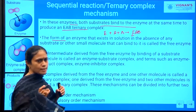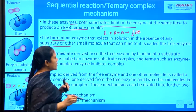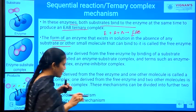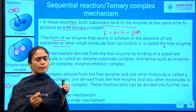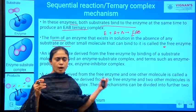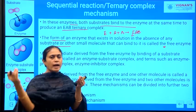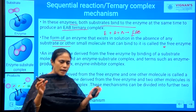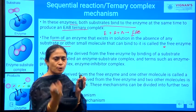The form of an enzyme that exists in solution in the absence of any substrate or other small molecules that can be bound to the enzyme is called the free enzyme. Total enzyme is the enzyme given in the particular reaction — the amount of enzyme you have added into your reaction mixture.